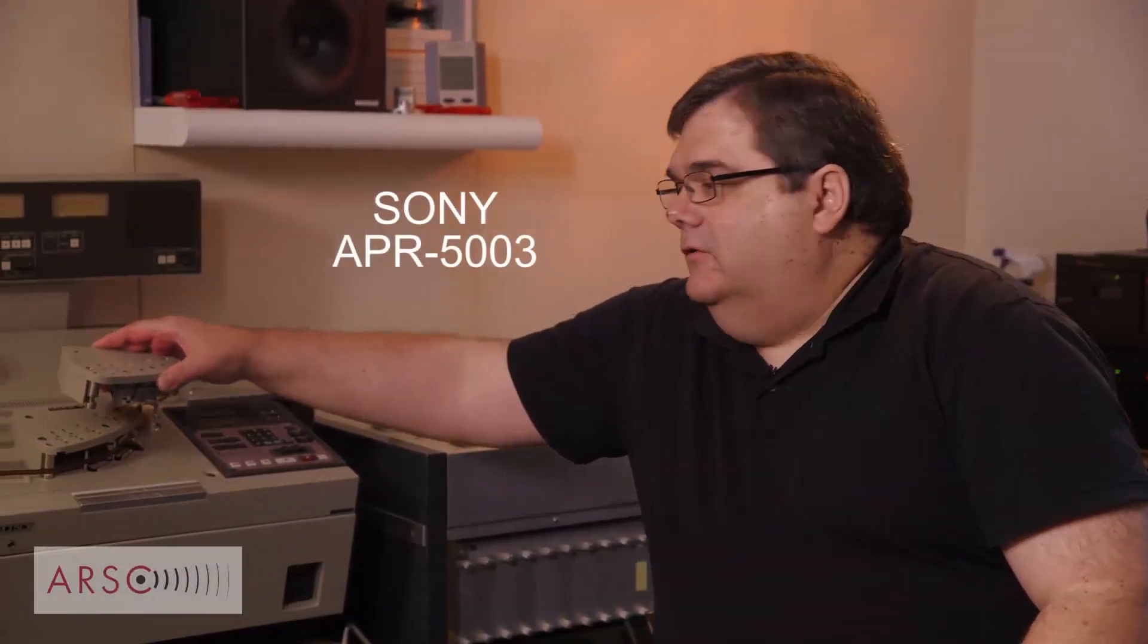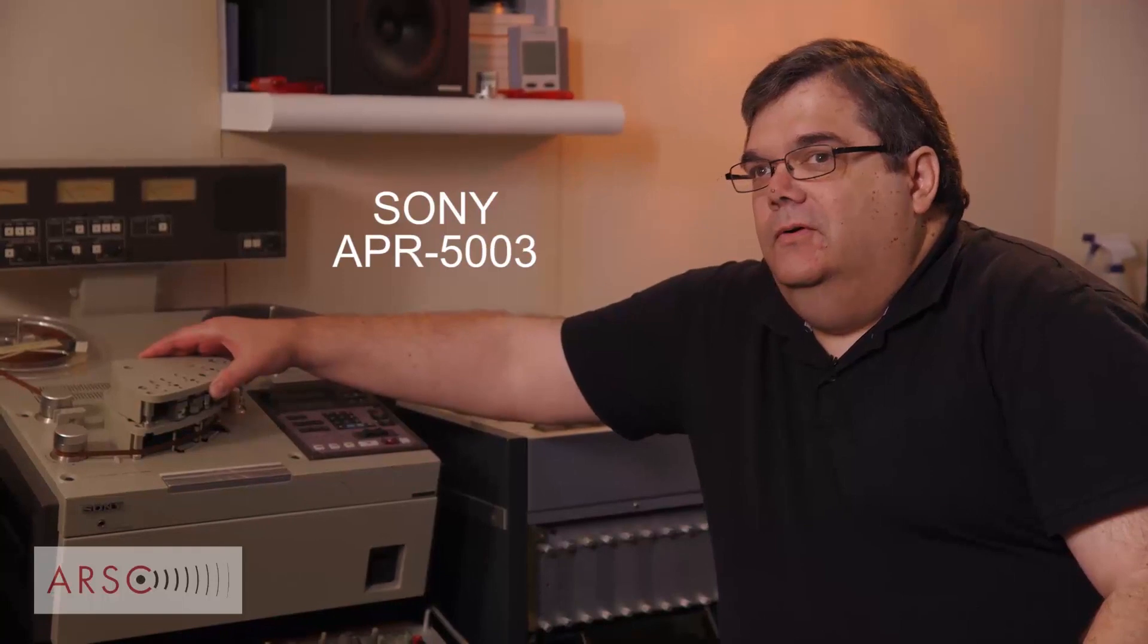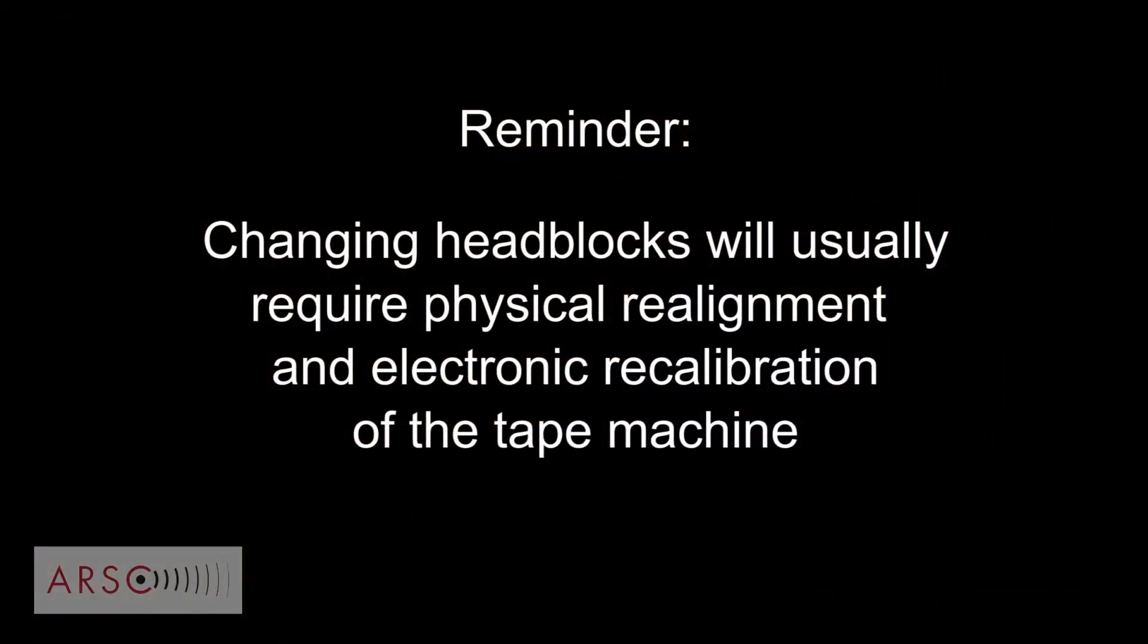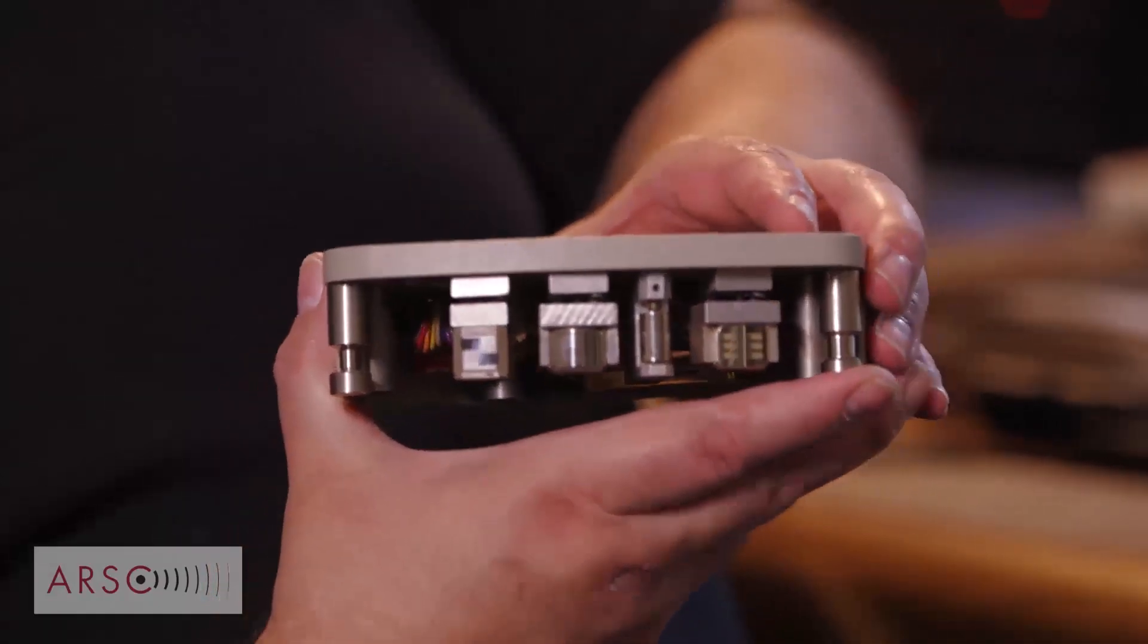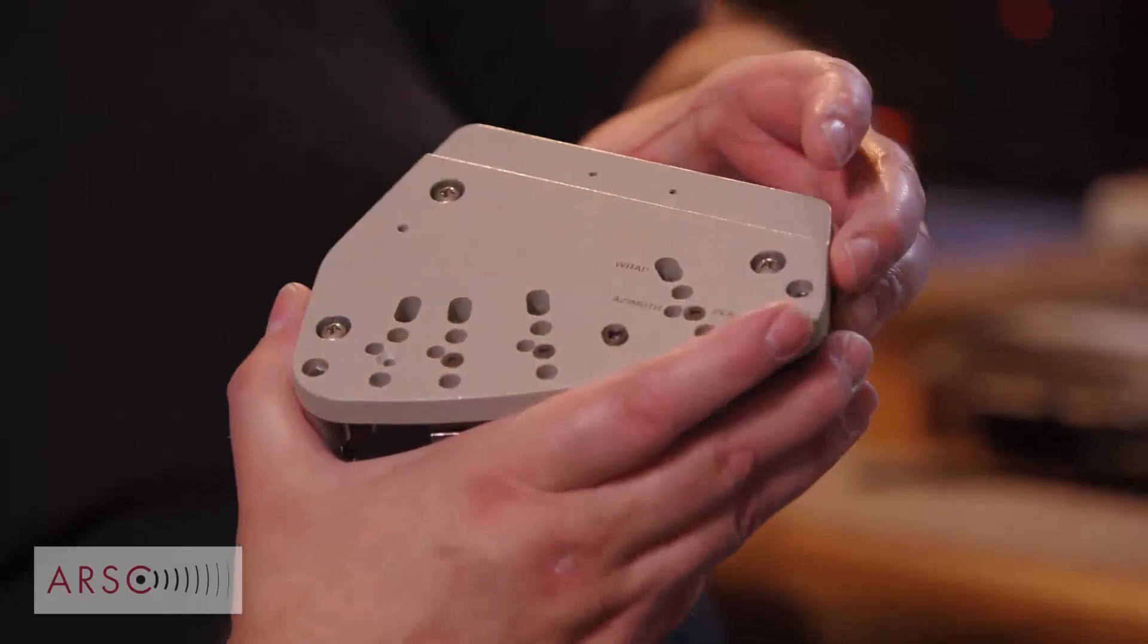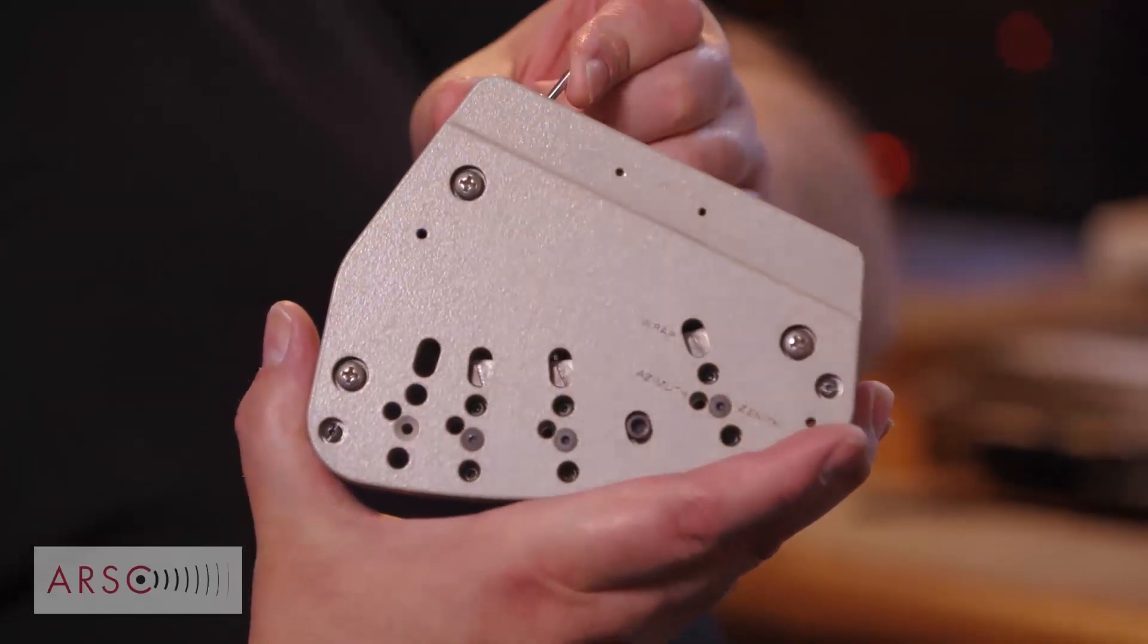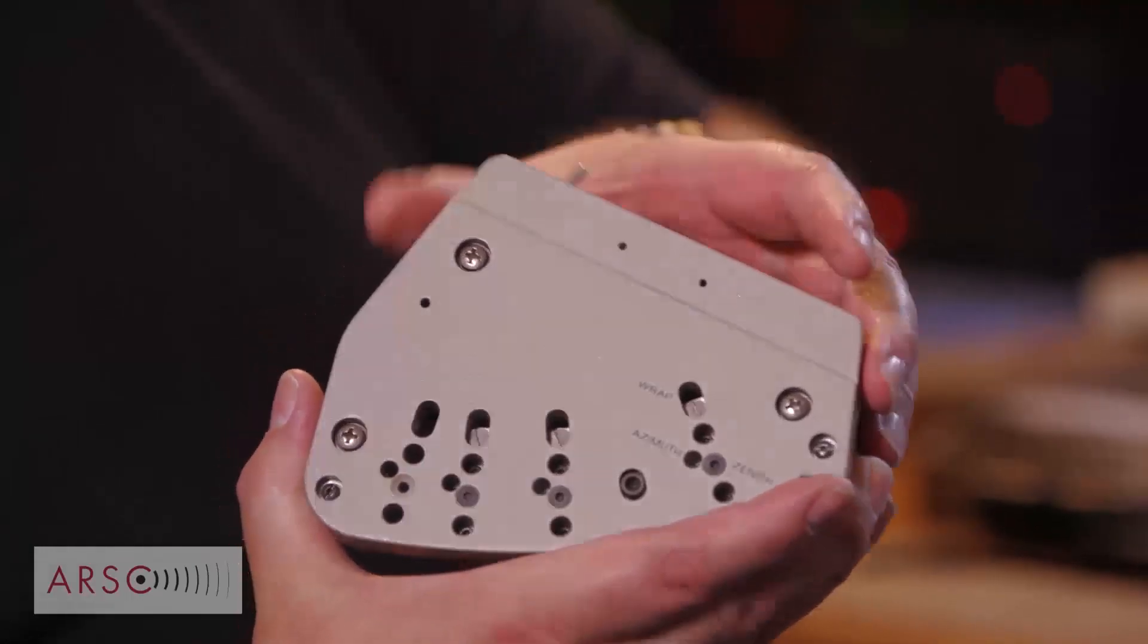One of the things we do is we have replaceable head blocks on a machine. This is for the Sony APR, and it fits, this whole assembly removes, and it allows us to change on the machine what head we are using on a given base machine. This particular block is arranged with two different playheads, rather than the record head. One of the reasons we did that was to conserve head assemblies for infrequently used heads, and we put a switch in that selected one or the other. This enables us to have two formats in one head assembly.